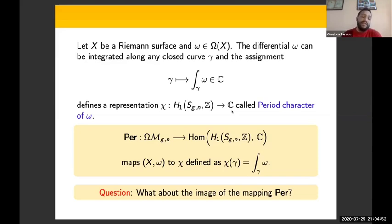This representation is called the period character of ω. This can be thought of as an object naturally attached to the abelian differential.